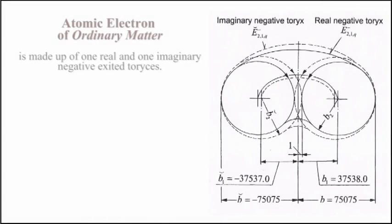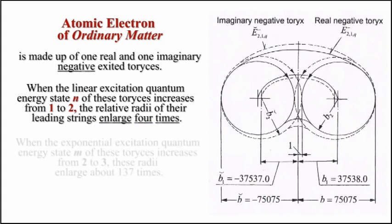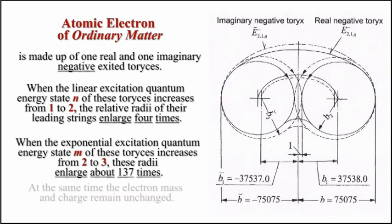The atomic electron of ordinary matter is made up of one real and one imaginary negative excited torese. When the linear excitation quantum energy state n of these toreses increases from 1 to 2, the relative radii of their leading strings enlarge 4 times. When the exponential excitation quantum energy state m increases from 2 to 3, these radii enlarge about 137 times. At the same time, the electron mass and charge remain unchanged.